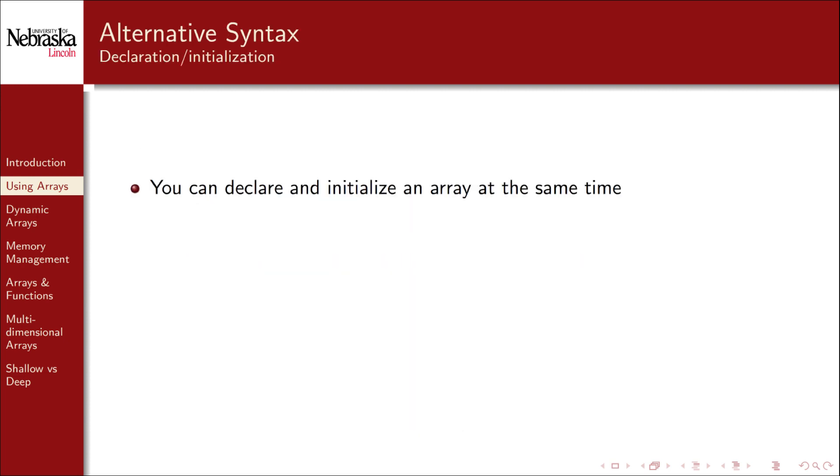You can also declare and initialize an array at the same time using the following syntax. You use curly brackets and specify a comma delimited list of values that you want stored in the array. When using this syntax specifying the size is optional because the compiler can infer how big of an array you need to hold the given values.